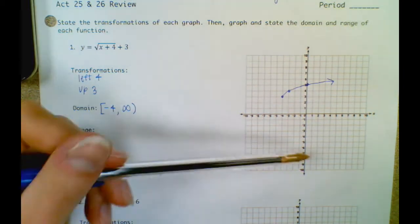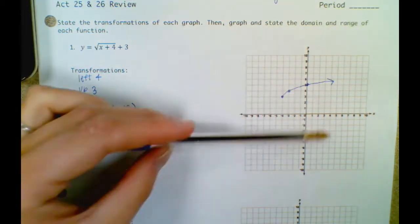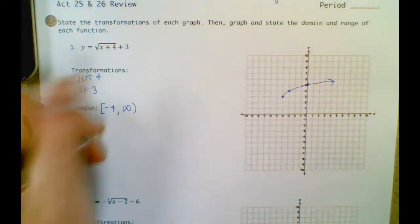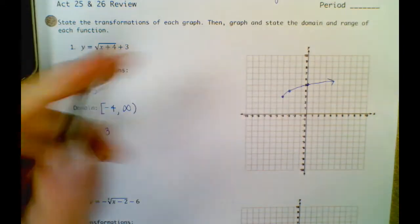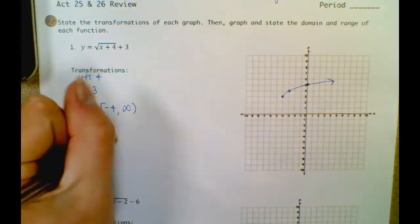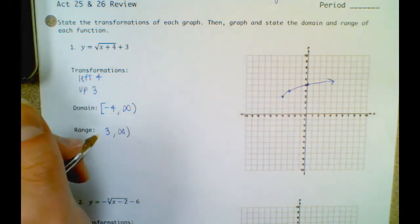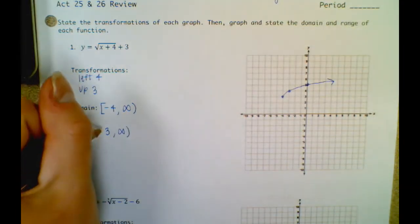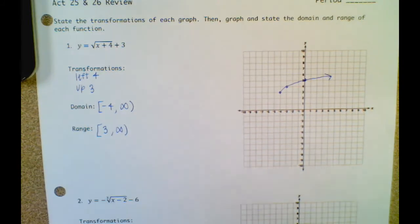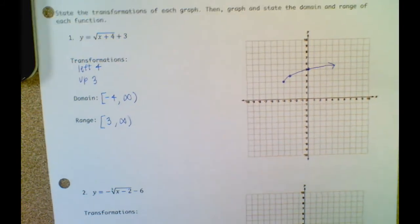For the range, remember, that's y-values from the bottom to the top. My lowest y-value is three, and my highest y-value goes up towards infinity. We always use parentheses on infinity symbols, and then three has a bracket because the point is included. And that's it.